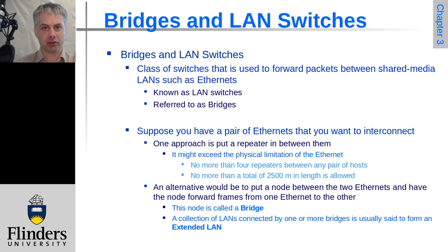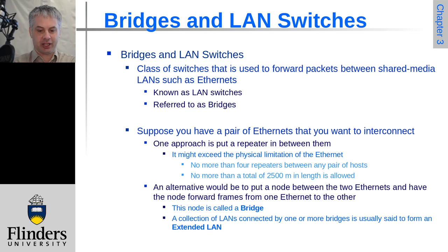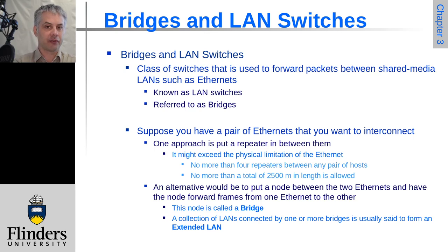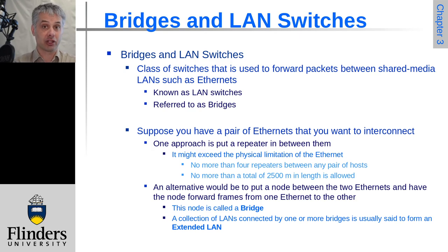This is talking not about twisted pair but about coaxial cable where each node is on the string of cable. Eventually you might end up with a network that's too long, or it might have more than four repeaters which is not allowed. Alternatively, you can bridge together two networks. Rather than repeating all communications, you bridge them — now you have two separate network segments and the bridge forwards only that traffic which needs to go to the opposite Ethernet, while the rest stays locally.